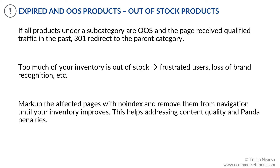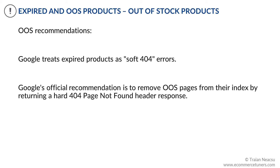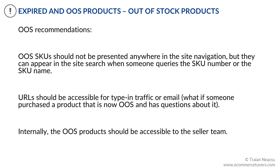This helps addressing content quality and Panda penalties. Google treats expired products as soft 404 errors, meaning out-of-stock pages are considered low quality and in many cases should be noindexed. Google's official recommendation is to remove out-of-stock pages from their index by returning a hard 404 page-not-found header response. However, this approach doesn't work well for UX and conversion. Out-of-stock SKUs should not be presented anywhere in the site navigation, but they can appear on internal site search results pages when someone queries the SKU number or name. Out-of-stock URLs should be accessible for typing traffic or email, to assist those who have questions about a product they purchased in the past and is now out-of-stock.